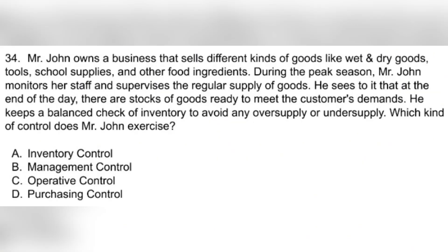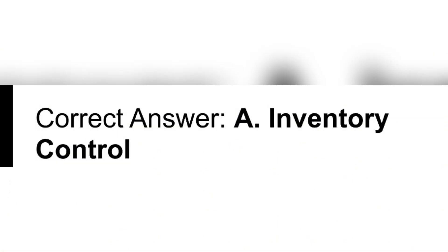Question 34. Mr. John owns a business that sells different kinds of goods like wet and dry goods, tools, school supplies, and other food ingredients. During the peak season, Mr. John monitors his staff and supervises the regular supply of goods. He sees to it that at the end of the day there are stocks ready to meet customer demands. He keeps a balanced check of inventory to avoid any oversupply or undersupply. Which kind of control does Mr. John exercise? A. Inventory control. B. Management control. C. Operative control. D. Purchasing control. Correct answer: A. Inventory control.